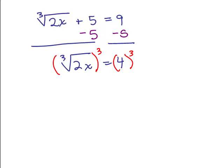When the cube root of 2x cubed then gives me 2x, what's underneath the cube root sign and 4 cubed means 4 times 4 times 4, which is 64. So we get the equation 2x equals 64, just divide both sides by 2 and we get 32.